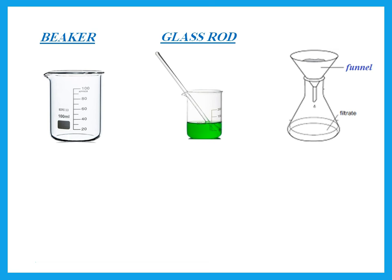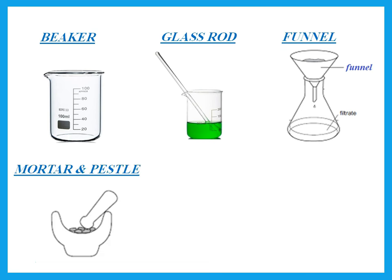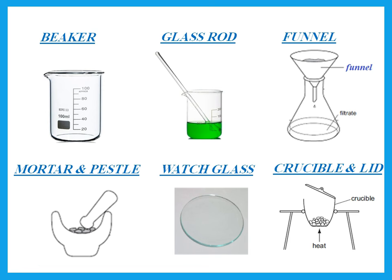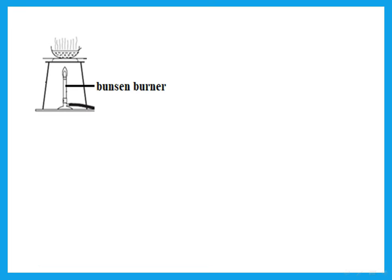This is a beaker. This that we use to stir is a glass rod — we don't call it a stirring rod, we call it a glass rod. This is the funnel, which we use for filtration. This is a mortar and pestle, used for crushing solids. This is a watch glass. We use it to put solid in, or to cover the beaker if it contains something that evaporates easily, like ethanol. This is a crucible and lid that we use to heat a solid, such as a metal reacting with oxygen. This is the Bunsen burner that we use to heat substances in the lab.